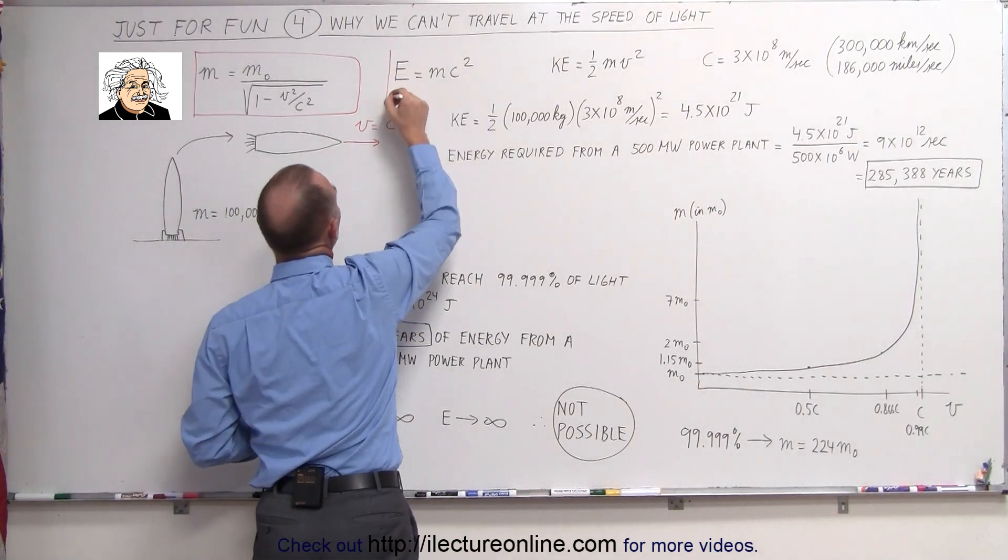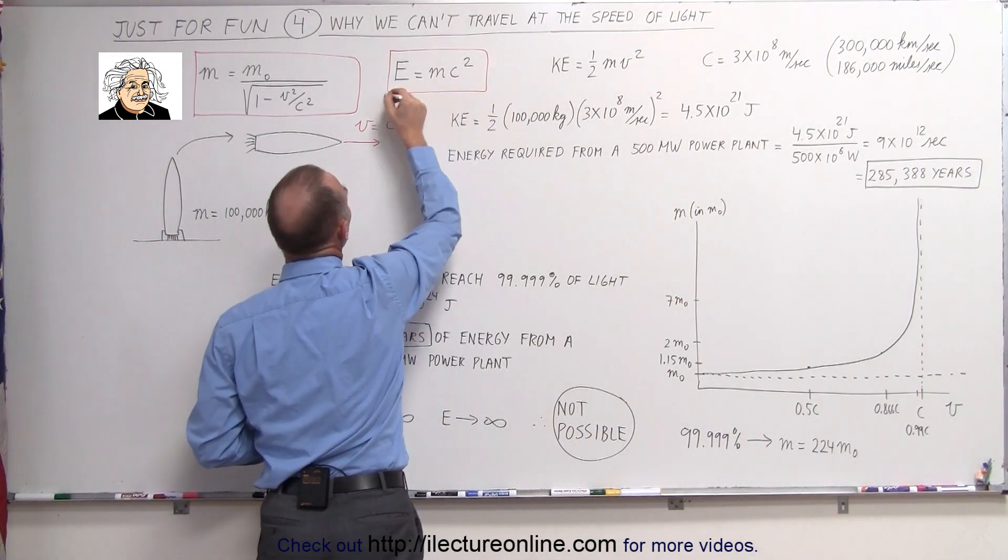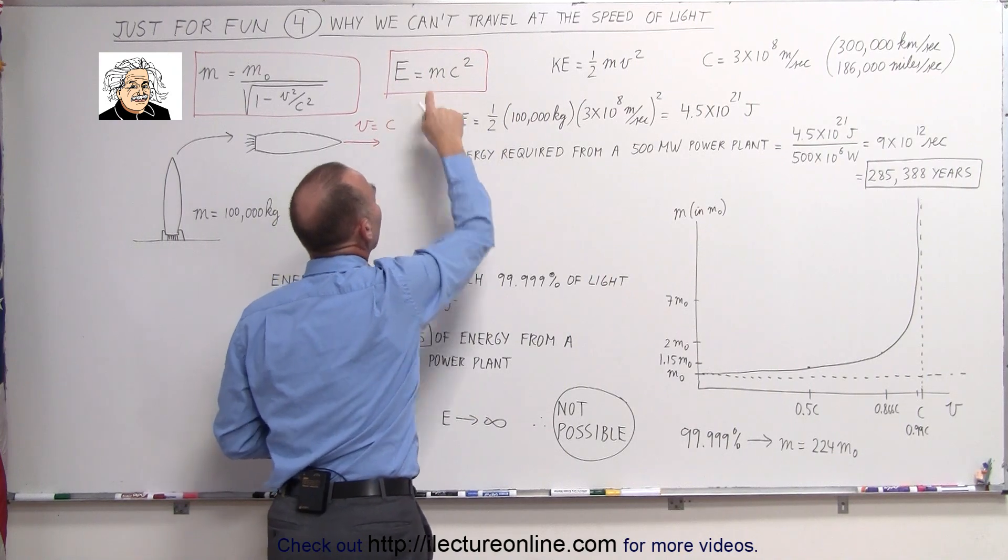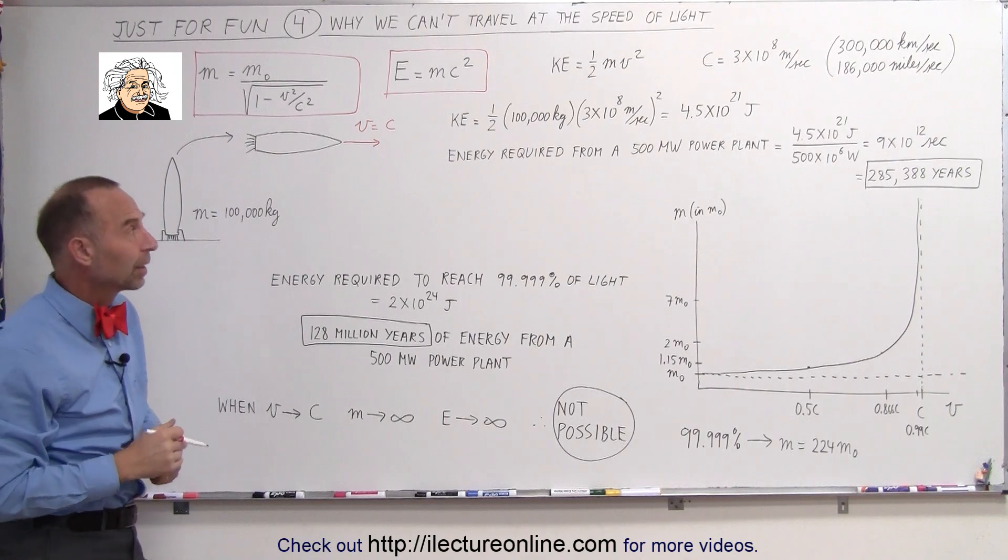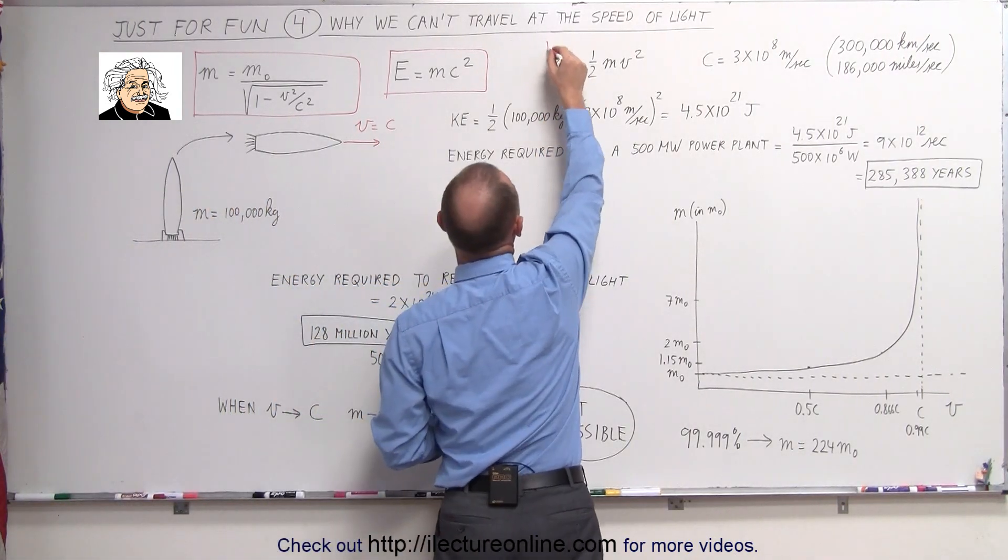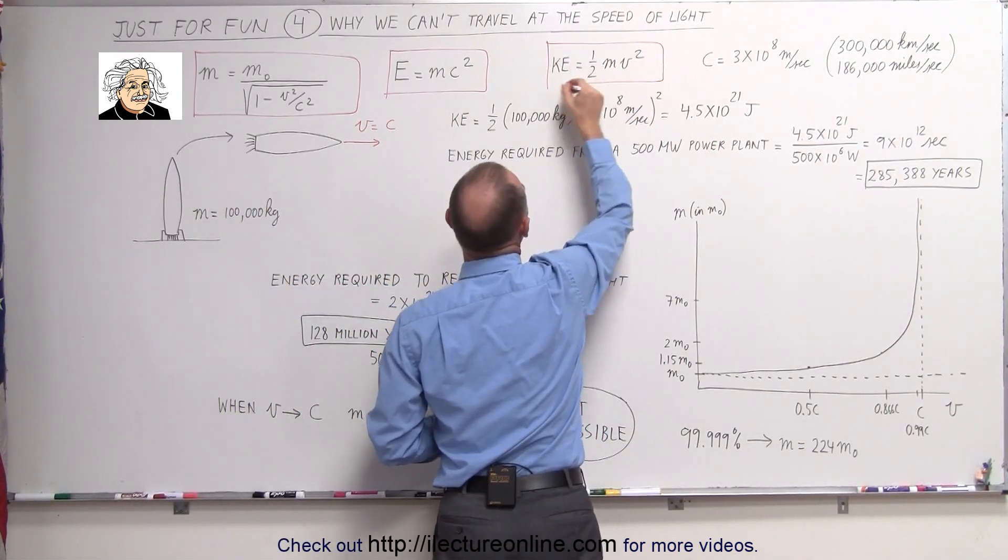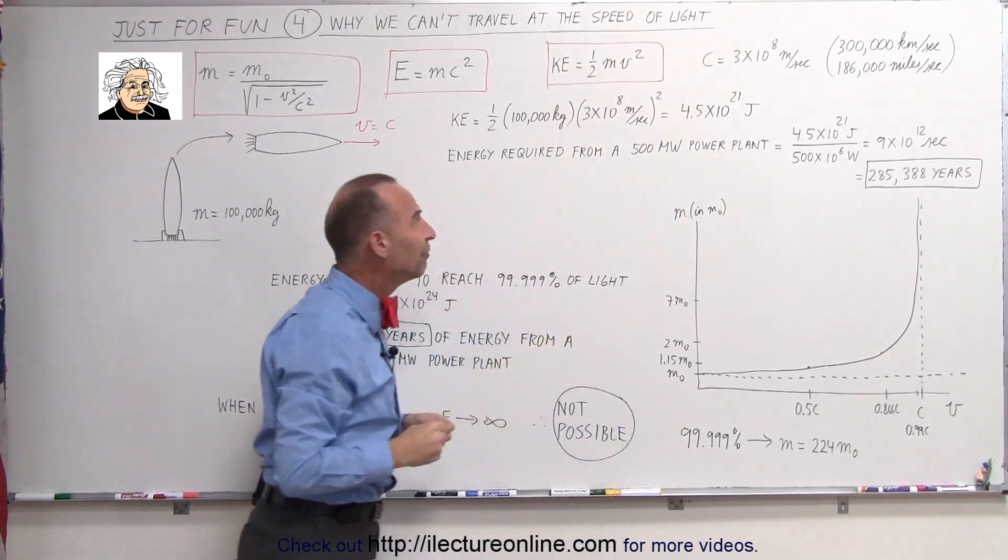A second equation we got from Einstein is that there is a relationship between the amount of energy we need and the amount of mass that an object has, and in this case the amount of mass an object will gain. The third equation comes from classical physics, where the kinetic energy is equal to one-half mv squared.